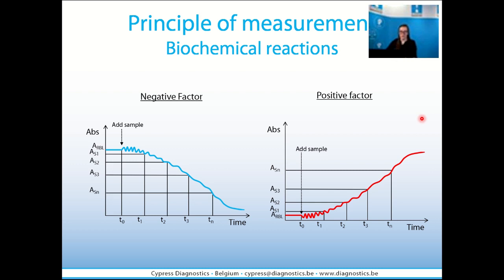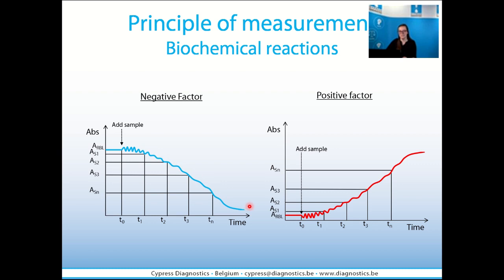How do we know if the absorbance will decrease or increase during chemical reactions? The sign of the factor will indicate it. If the calibration factor is negative, this indicates the absorbance will decrease in time. If the factor is positive, it indicates the absorbance will increase in time. We have included some questions in the admission exam which are related to this information.